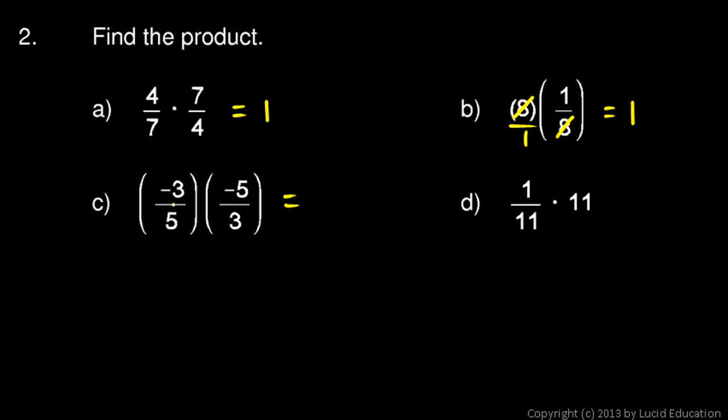Over here, negative 3 over 5 and negative 5 over 3, those are reciprocals so multiplied together it equals 1. And same here, 1 over 11 times 11 is just 1.